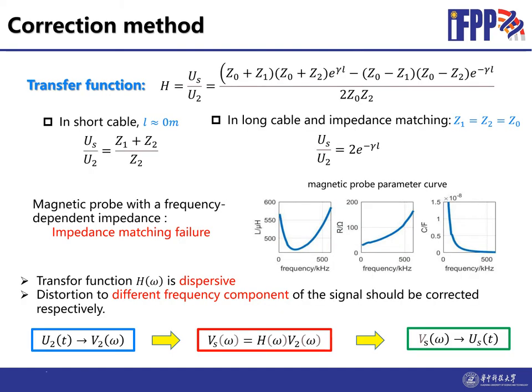For the transfer function, there are two situations where it can be simplified. One is in short cable where the length of the cable equals zero and the relationship between Us and U2 is as a divider. The other is in long cables with impedance matching conditions satisfied, where Z1 equals Z2 equals Z0. Here the relationship between Us and U2 can simplify as this expression. It is related to two parameters: one is the complex propagation constant, the other is the length of the cable.